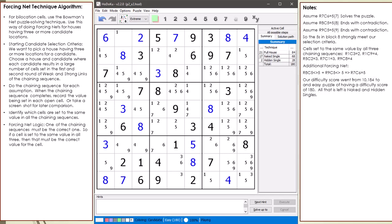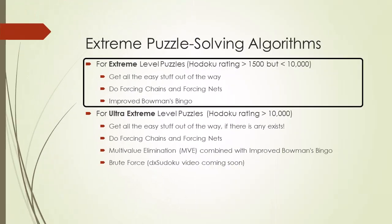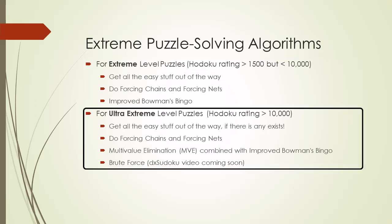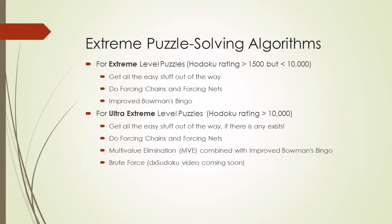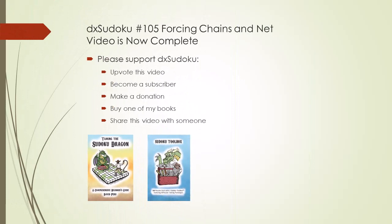Because I've been so successful in using forcing chains and forcing nets, next I will give you an updated puzzle solving algorithm for extreme puzzles. Here's my puzzle solving algorithm for extreme puzzles having a Hodoku rating greater than 1,500 but less than 10,000. And here's my puzzle solving algorithm for ultra extreme puzzles having a Hodoku rating greater than 10,000. This completes DX Sudoku training video number 105.